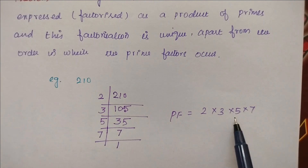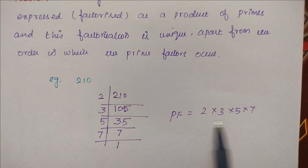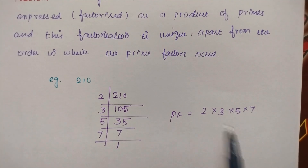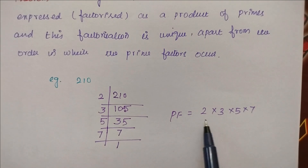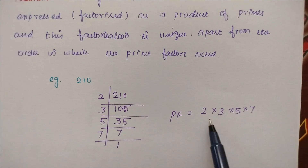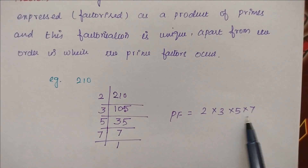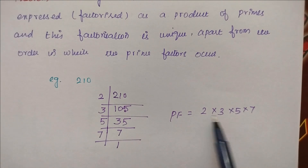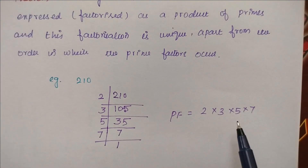And this factorization is unique. Unique means this is the only one — these are the only factors. The factors of 210 are 2, 3, 5, and 7 — that's it. It cannot have any other factors.